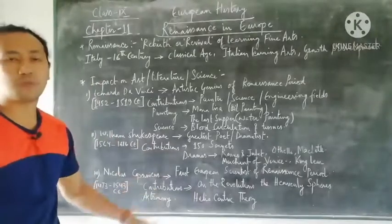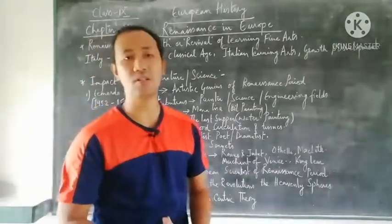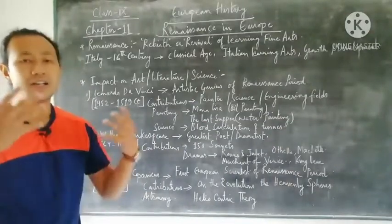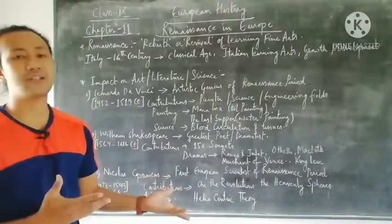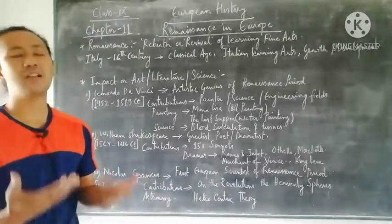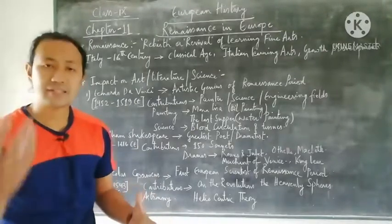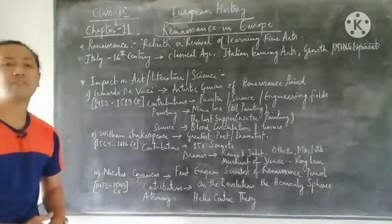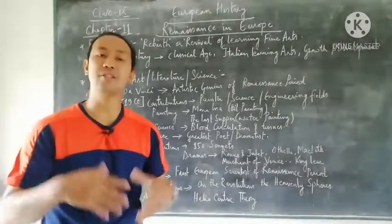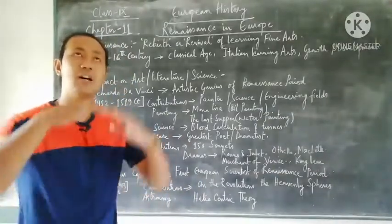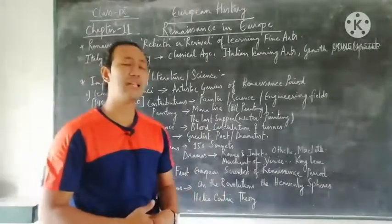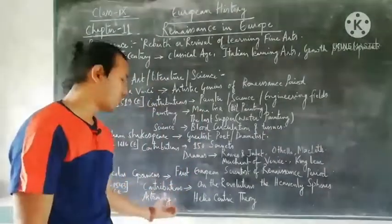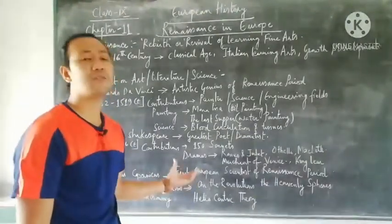The last topic covers Nicholas Copernicus, a name familiar from geography textbooks as well. Nicholas Copernicus explained the earth, sun, heavenly bodies, the solar system, and the heliocentric theory, which were admired by citizens of European countries during that era. His birth year was 1473 and death year 1543. He is considered the father of modern astronomy and the first great European scientist of the Renaissance period.